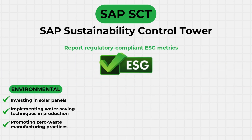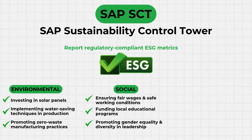ESG metrics help companies measure performance in three key areas. First, environmental — what a company does to help the planet, such as investing in solar panels, saving water in production, or reducing waste. Next, social — how a company treats its people: does it have fair wages, a safe workplace, support for local education, gender equality, or diversity in leadership?